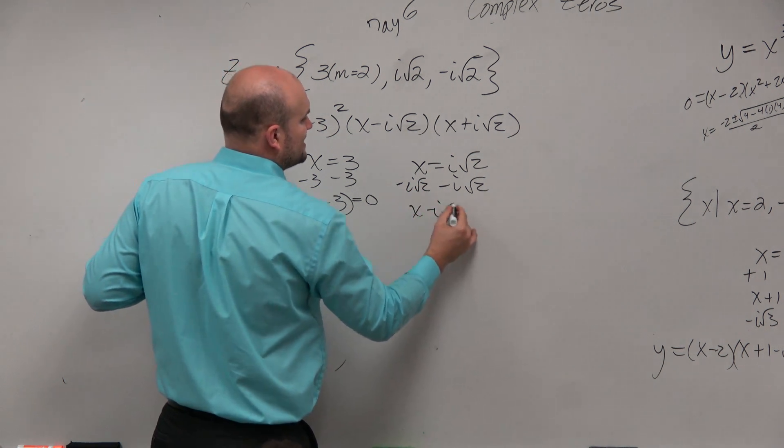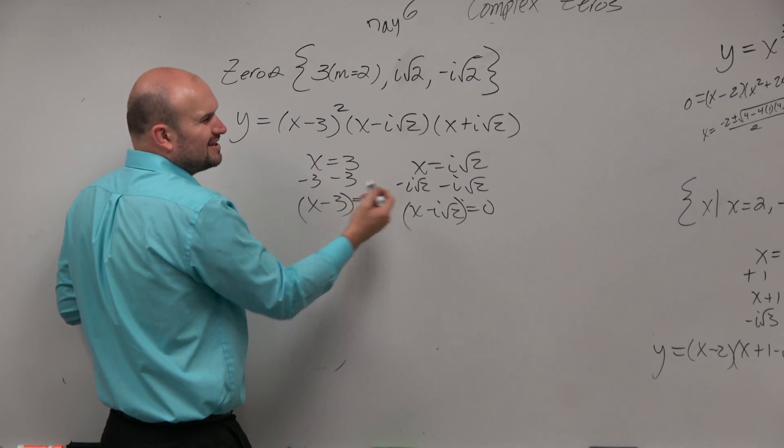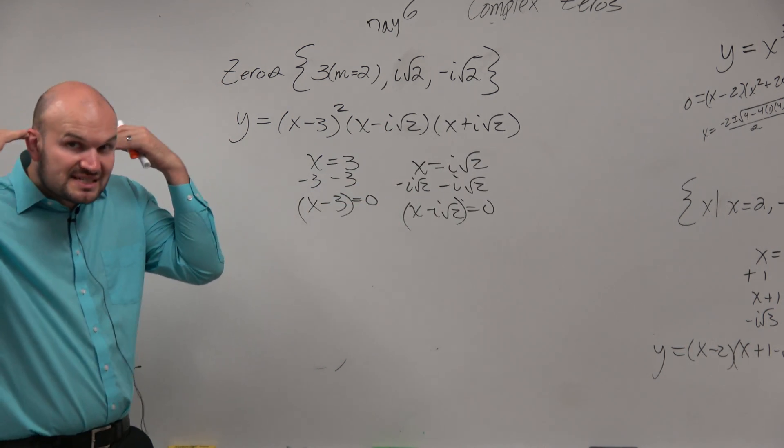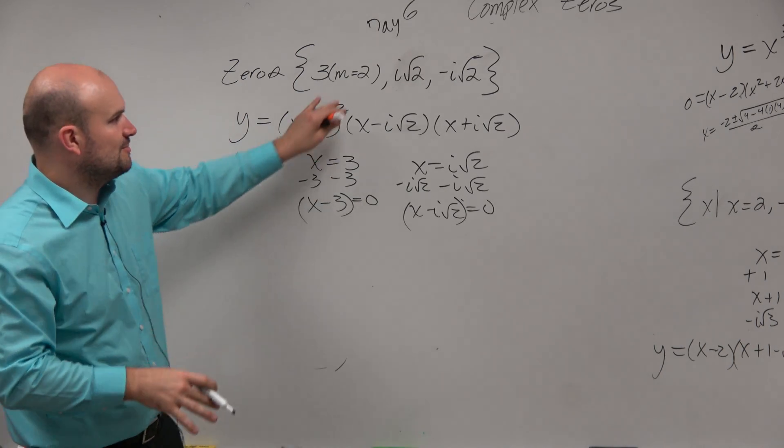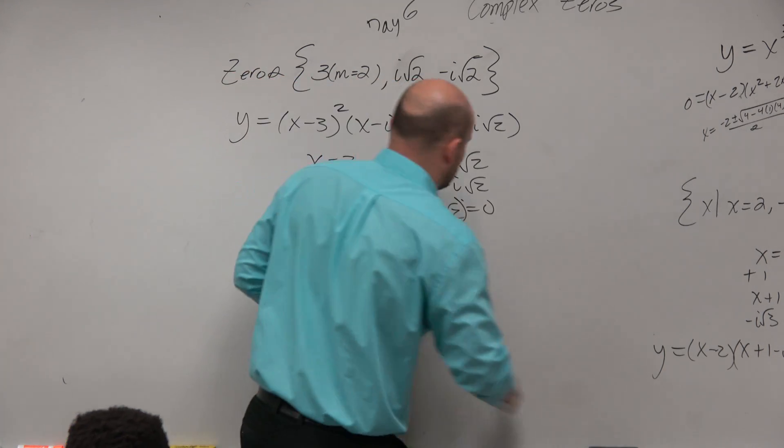x minus i square root of 2 equals 0. That's another factor, right? But it kind of gets boring when I have to keep on doing that. You guys, hopefully, should just start being able to see that in your head. Oh, you're just doing inverse operations. You're basically just doing the inverse operation of each of those factors to get to your factors.